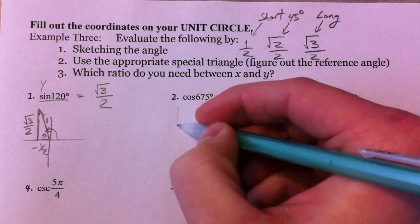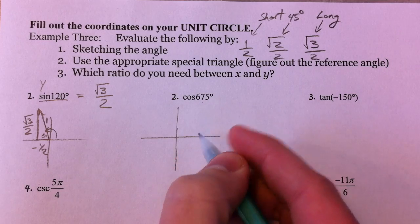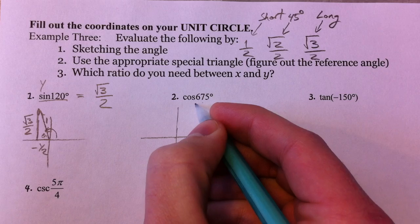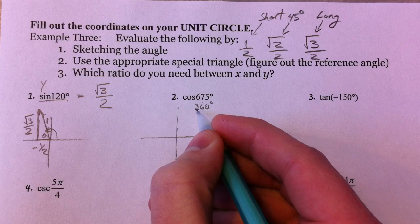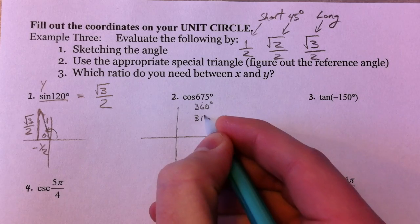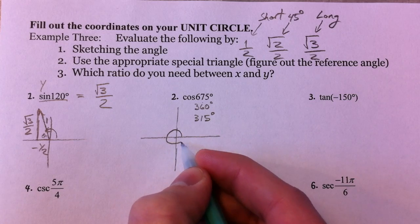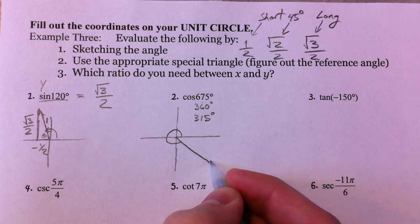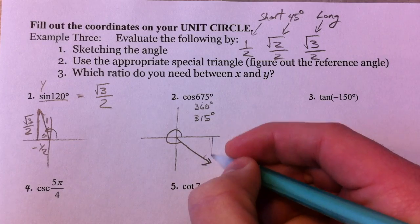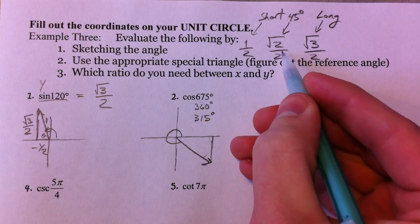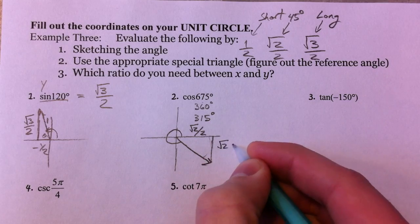Cosine of 675. Now, 360 is one time around, so you can already tell that you've gone around more than once. If you subtract 360 from this, you know it's coterminal with 315. 315 goes almost all the way around, but because it ends with that 5, you know it's 45 degrees less than 360. So because we're dealing with the 45, you know the sides are the same — √2/2 and √2/2.